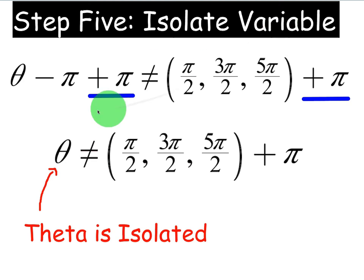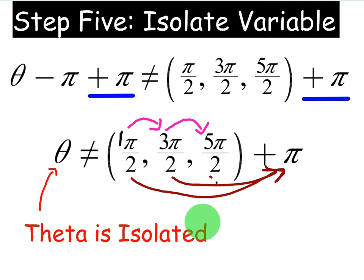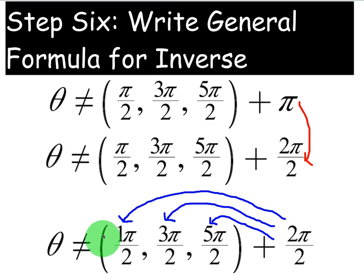Step five is to isolate the variable. So now we're going to add pi to both sides to get rid of it on the left. And now we have theta is not equal to pi over two, three pi over two, and five pi over two plus pi. Now again, what I like to do is I like to put coefficients next to all of the numerators just so I can see that this is just simply hopping in odd numbers, so that will help me recognize my pattern. So step five, isolate the variable. We have theta is isolated. Awesome.